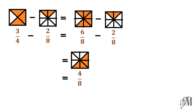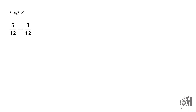Let's look into some more examples. 5 over 12 minus 3 over 12. Here, 12 is the common denominator. Therefore, nothing to work out there — 5 minus 3 is 2 over 12.